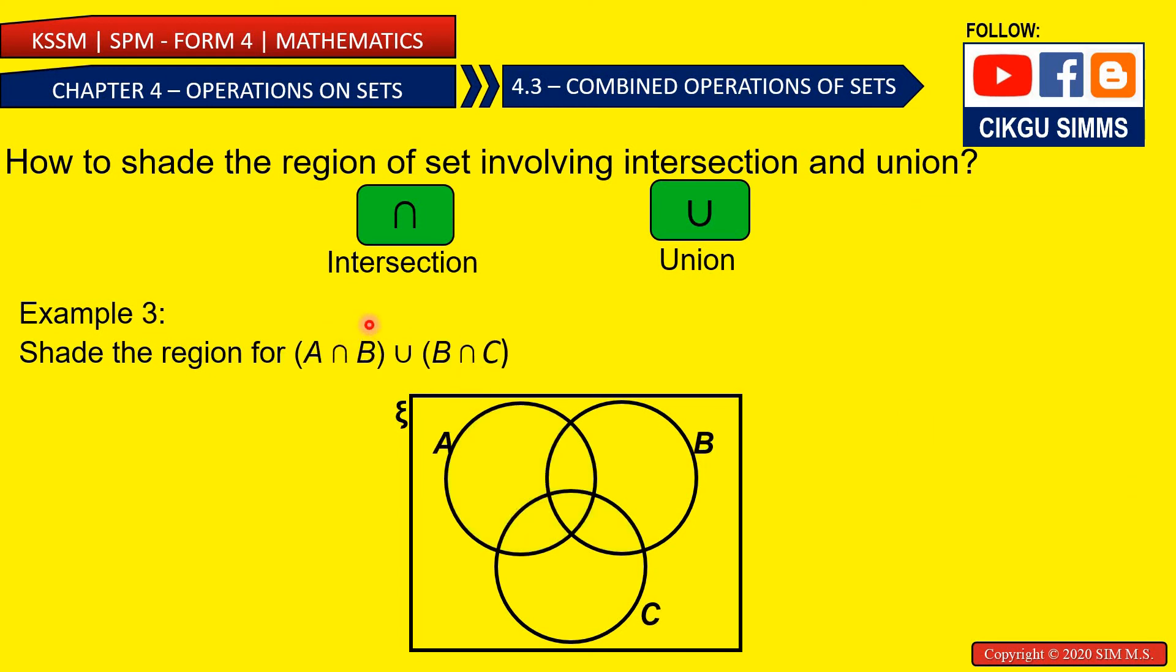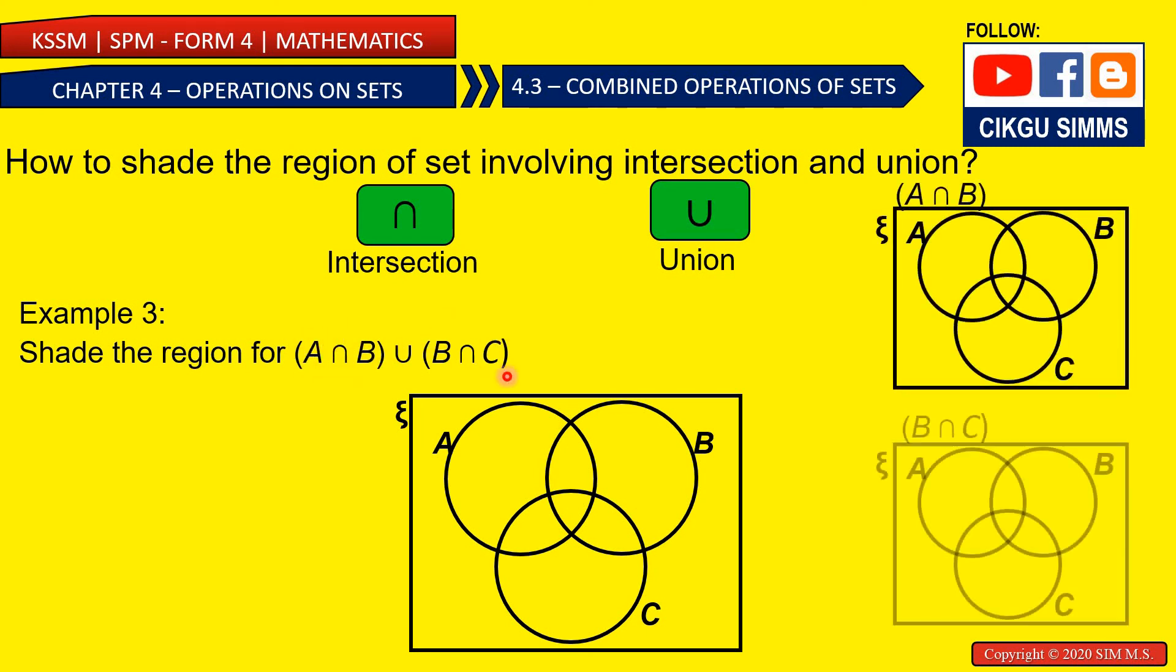How about A and B union, B and C? So you need to do A and B first and then you do B and C and then you find the union. So first A inside B. A inside B is this part. And then B and C. B and C is this part, right?